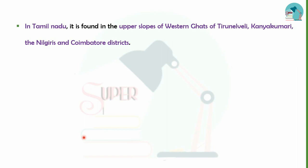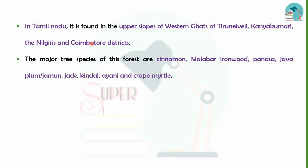In Tamil Nadu, tropical evergreen forests are found in the Western Ghats upper slopes, Kanyakumari, and Coimbatore districts. The tree species growing here include Cinnamon, Malabar Iron Wood, Panasa, Java Plum, Jamun, Jackfruit, Kindle, Havani, and Scrap.